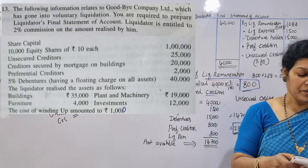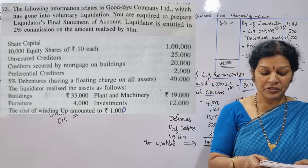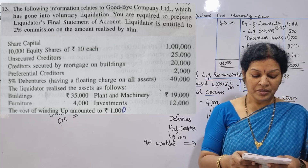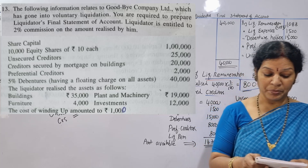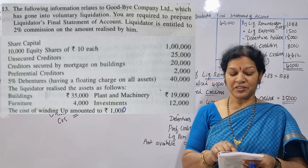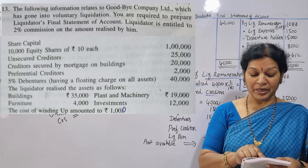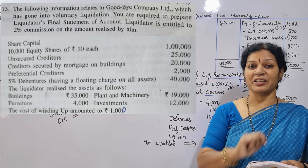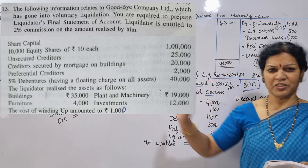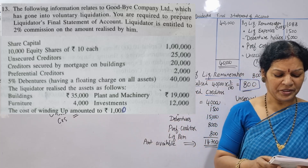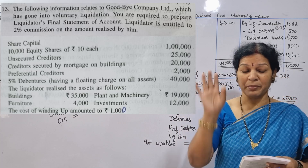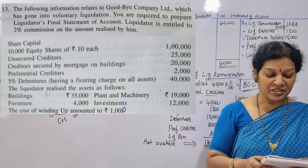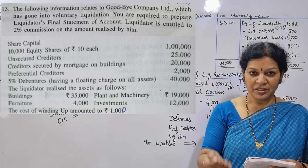Share capital: 10,000 equity shares at $10 each. Unsecured creditors are secured by mortgage on building. Secured creditors are by mortgage on building. Preferential creditors. Debentures. And the liquidator realized the assets as follows.